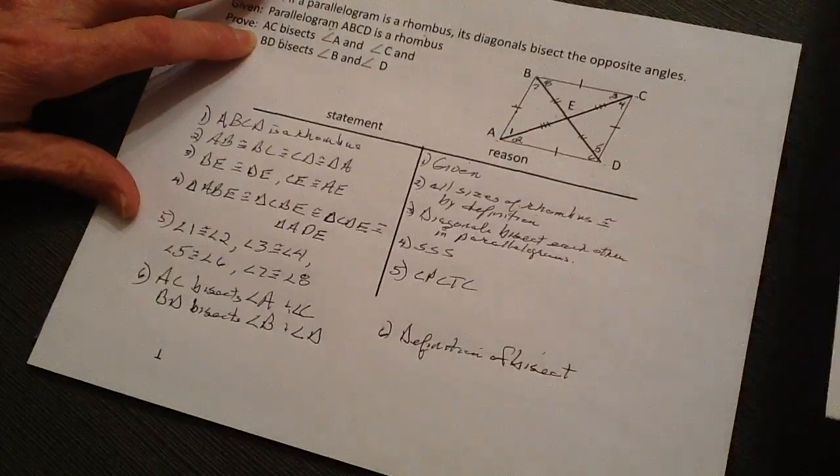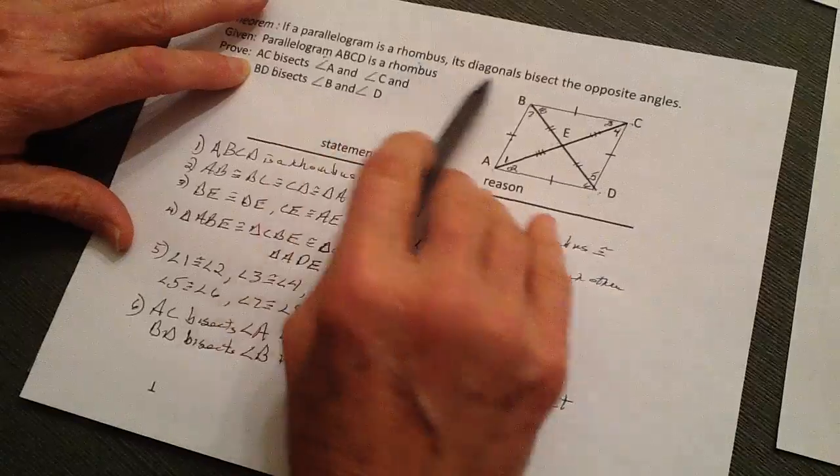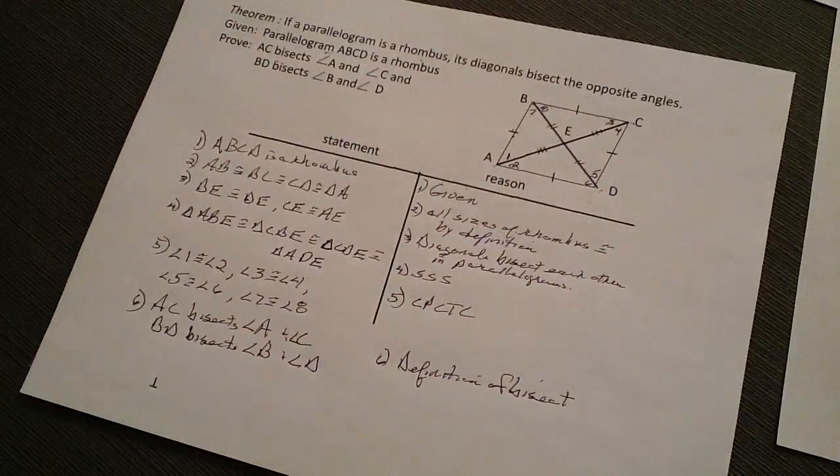So there we have it. We know now that we've got a rhombus, the diagonals are going to bisect the opposite angles.